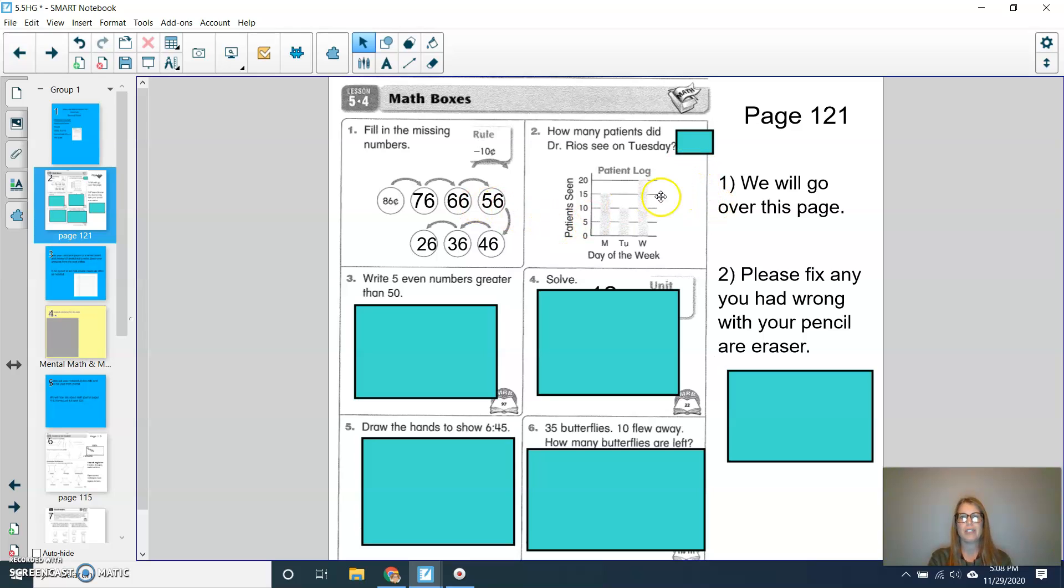For question two, how many patients did Dr. Rio see on Tuesday? So the TU is an abbreviation for Tuesday. And I can see that he saw 10 patients on Tuesday. For question three, write five even numbers greater than 50. And there's lots of possible answers for this. So you didn't have to have the same that I had. But I chose to use 52, 58, 64, 90, and 98.